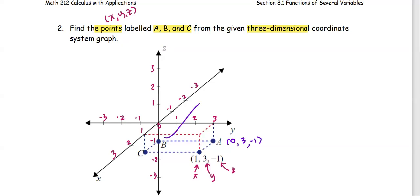For point B, it is zero units away in the x direction from the origin, and also zero units away in the y direction. For the z-axis, it is one unit away but in the negative direction. So the coordinates are zero, zero, negative one for point B.